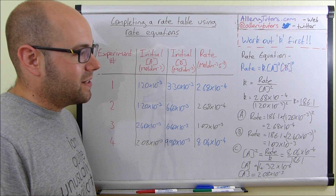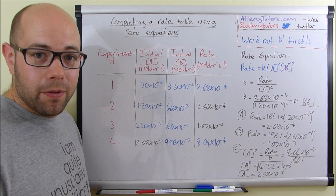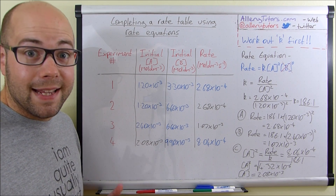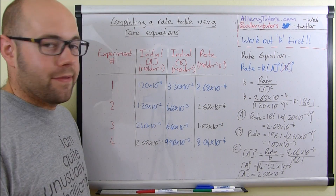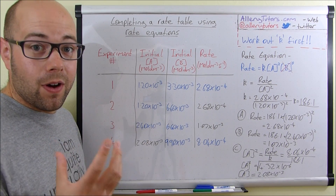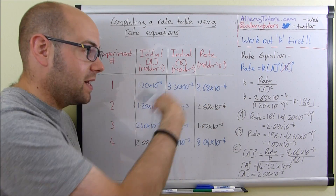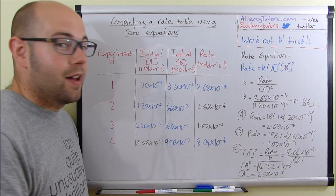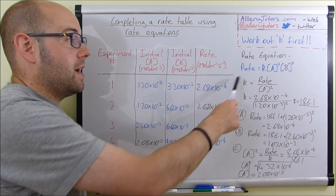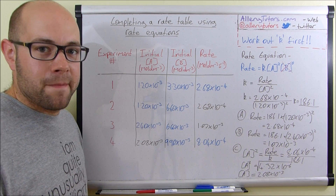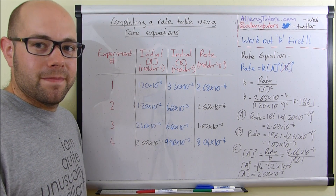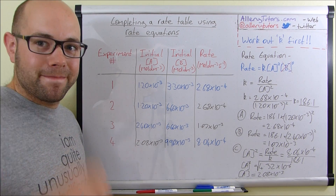There you go — all your numbers filled in. It's pretty straightforward once you know the method. The key thing is to work out k first, and once you've got k you can substitute into your rate expression to work out any missing values. That's it, bye bye.